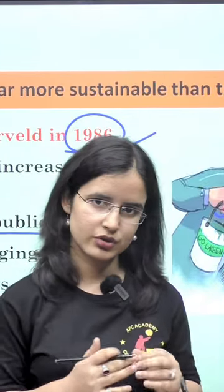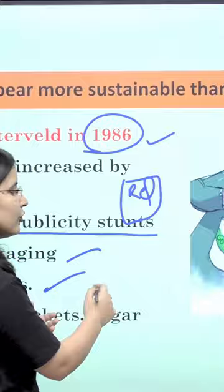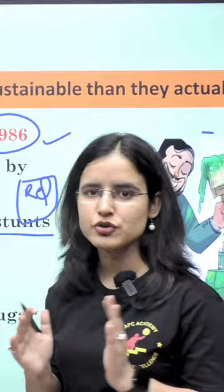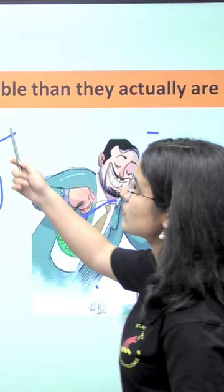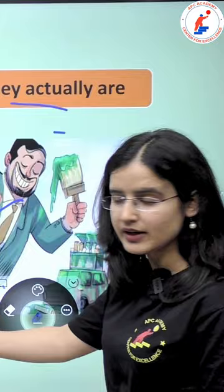In actual, there is no such thing. For example, take the example of the surf package — they make leaves on it — so it will appear very natural, but in actual there is no such thing. Greenwashing means making a brand appear more sustainable than it actually is. Examples include leaves on packets, sugar-free drinks, and paper straws.